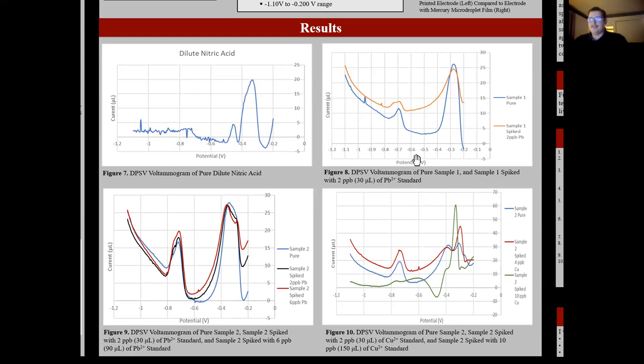In figure eight, you can see a voltammogram of sample one spiked with approximately two parts per billion, 30 microliters of one ppm lead standard. You can see here that the peak at negative 0.7 is a little bit higher on the graph, and that indicates that there was a larger reading of current, which is how you measure for concentration.